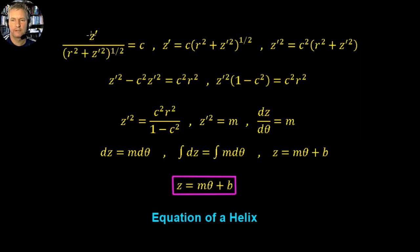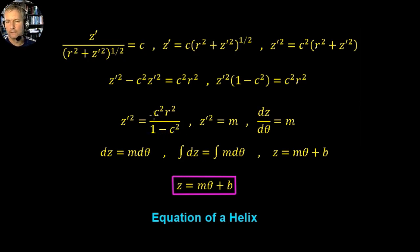Continuing, we have ż / (r² + ż²)^(1/2) = c. Rearranging gives ż = c(r² + ż²)^(1/2). Squaring both sides and multiplying out: ż² = c²r² + c²ż². Bringing c²ż² to the other side and factoring: ż²(1 − c²) = c²r². Therefore ż² = c²r² / (1 − c²). Since r, c, and 1 are all constants, the entire right-hand side is a constant, so dz/dθ = m, a constant.